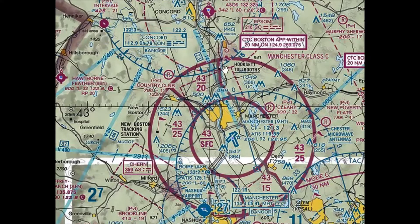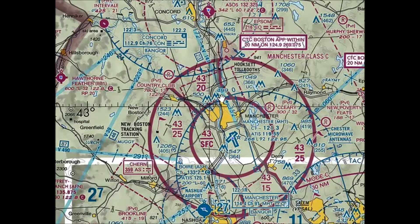With the exception of areas in the dashed magenta lines, that's where Class C goes down to the surface. So if you want to fly a drone under a Class B or Class C shelf, inspect to see if there's any Class C going down to the surface, Class D airspace, or other airspace that would prevent you. If there is none, you're all set — you can fly the drone in those areas without requiring a waiver or authorization. However, if you want to fly in an area like Manchester, New Hampshire, you would have to apply for a waiver because the Class C goes all the way to the ground.